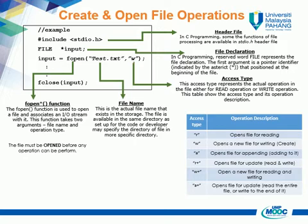The six access types are: r — opens file for reading; w — opens a new file for writing; a — opens file for appending, adding to it; r+ — opens file for update, read and write; w+ — opens a new file for reading and writing; and a+ — opens file for update, reading the entire file or writing to the end of it.